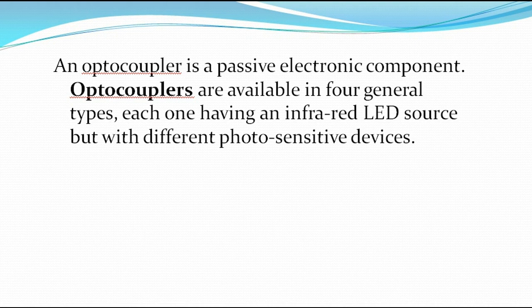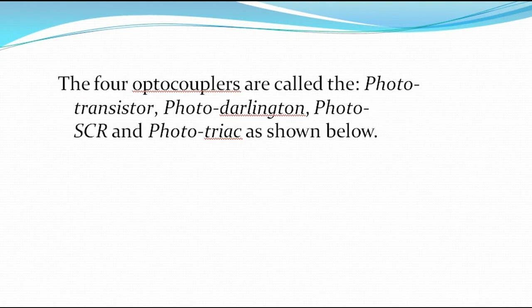An opto-isolator is a passive electronic component. Opto-couplers are available in four general types, each one having an infrared LED source but with different photosensitive devices. The four opto-couplers are called the phototransistor, photo Darlington, photo SCR, and photo TRIAC, shown as below.